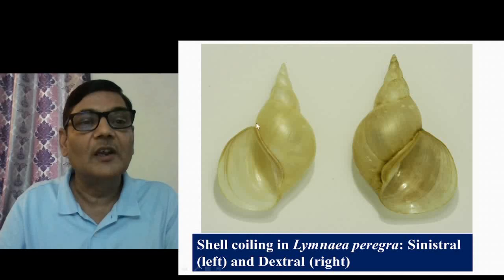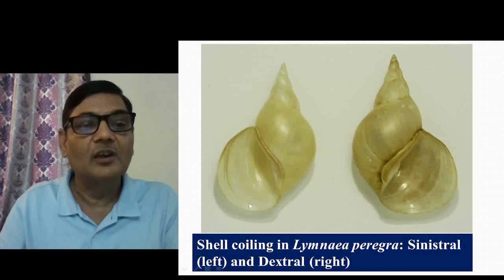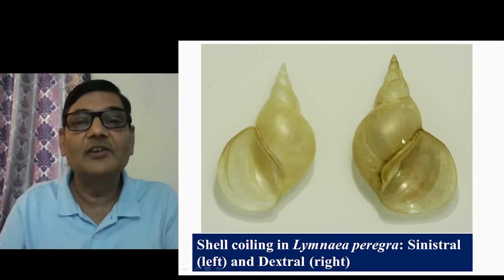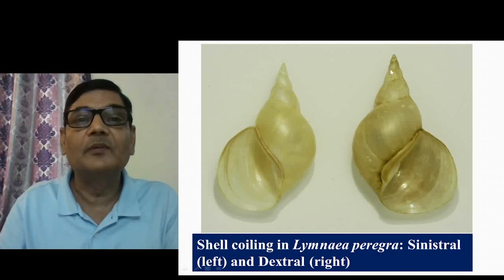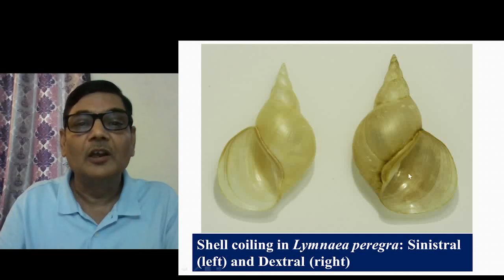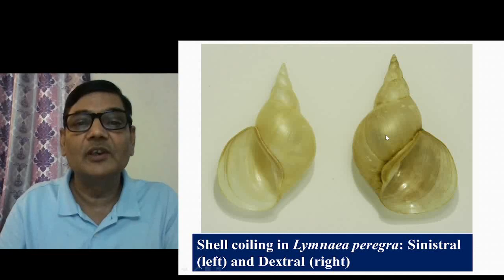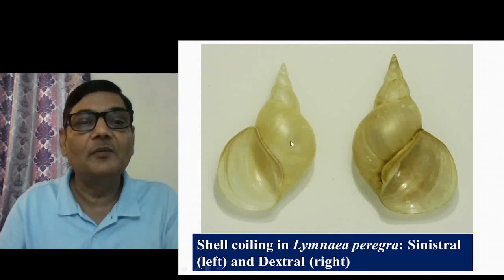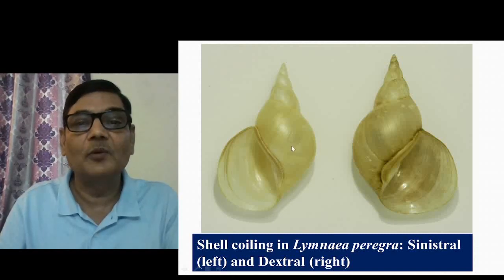This left one is a sinistral shell of Limnea and this right one is a dextral type. In case of dextral coiling, which is found in much larger numbers, you will find very few snails which will have sinistral type of coiling.